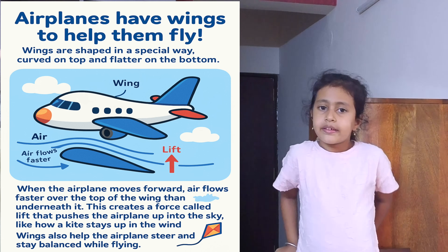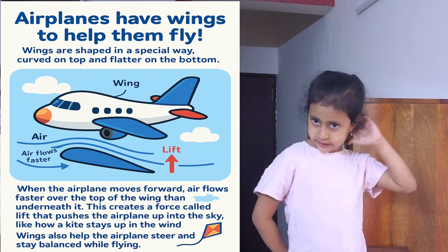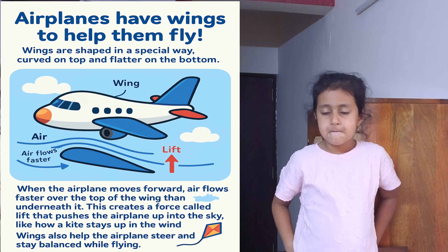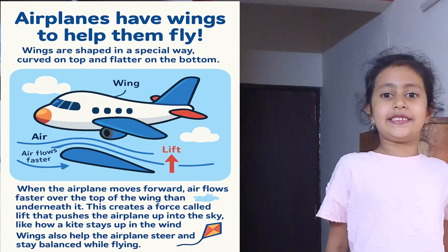And you must have seen kites — they are absolutely flat but with some stick. That is how a kite also stays up in the wind. When you pull out a string and it goes against the wind, the wind pushes it towards the sky. Similarly, wings also help the aeroplane go to the sky and stay balanced while flying, like a kite.